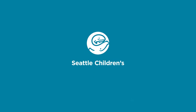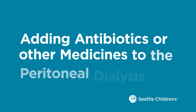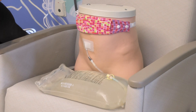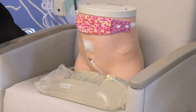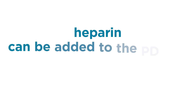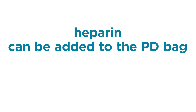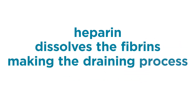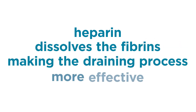This video shows how to add antibiotics to the PD solution bags. This is done when an infection in the belly area, called peritonitis, is suspected or confirmed. Other medicines such as heparin can also be added to the PD solution bag. Heparin is added when fibrin is present in the drain bag, as it dissolves the fibrin which makes the draining process more effective.